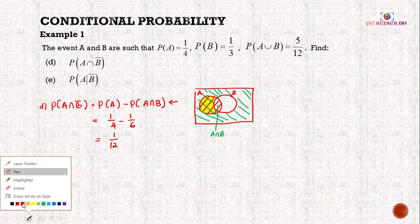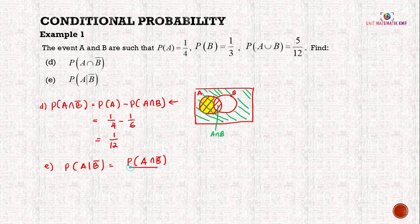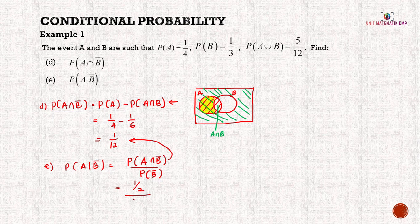For question E, find P(A|B̄) using the conditional probability formula: P(A∩B̄) / P(B̄). P(A∩B̄) = 1/12 from question D, divided by P(B̄) = 1 − P(B) = 1 − 1/3 = 2/3. Simplifying in the calculator, we get 1/8.